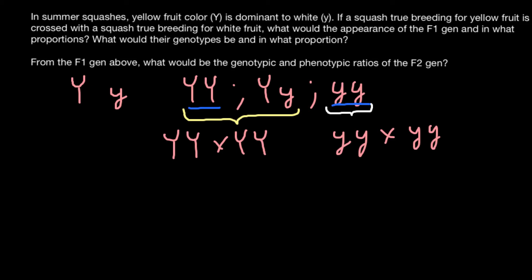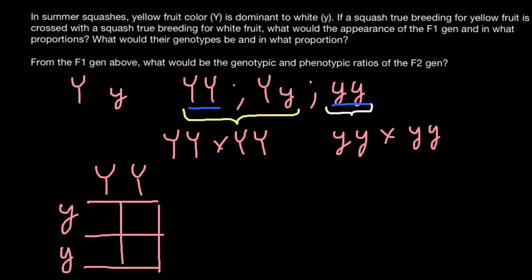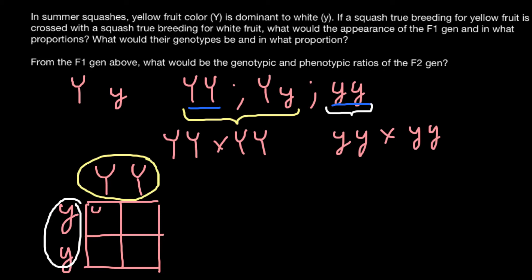Since we have to cross two true breeding parents, we can build a Punnett square. One true breeding parent would be homozygous dominant and another would be homozygous recessive — that parent produces white fruits, and the other produces yellow fruits. The genotypes in the Punnett square would all be capital Y small y.